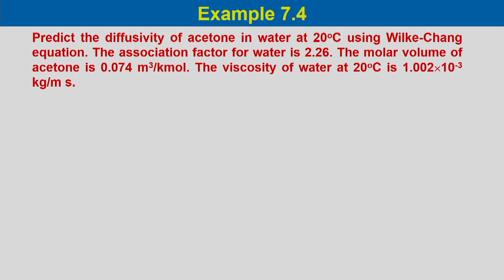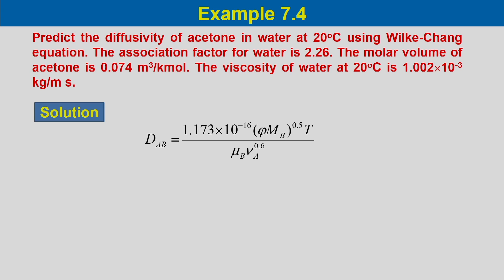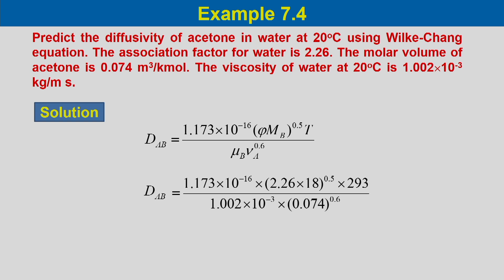Example: predict the diffusivity of acetone in water at 20°C using the Wilkie-Chang equation. Association factor φ = 2.26 for water, molar volume of acetone V_A = 0.074 m³/kmol, viscosity of water at 20°C = 1.002 × 10^(-3) kg/(m·s). Substituting these data into the Wilkie-Chang equation gives D_AB = 1.04 × 10^(-9) m²/s.